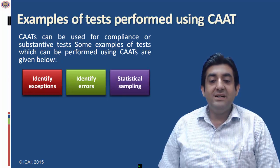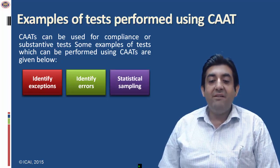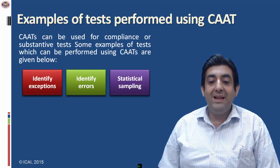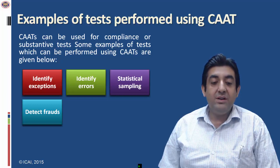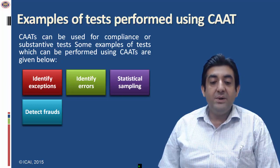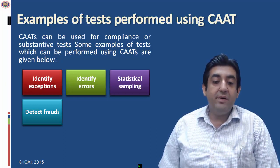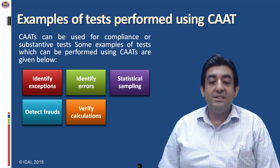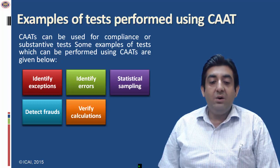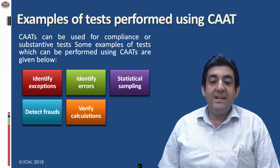Third is statistical sampling, which simply means applying statistical techniques to identify the required sample. Fourth, and very important, is detecting fraud — CAAT is very powerful software to identify the potential areas of fraud. Fifth is verify the calculations, which means recomputing the calculations in the audit software, like verifying TDS applied as per the criteria.